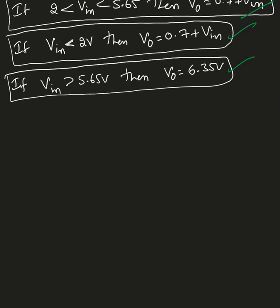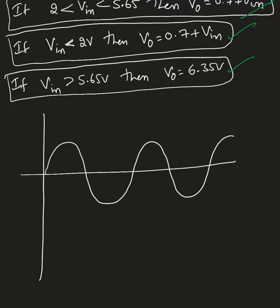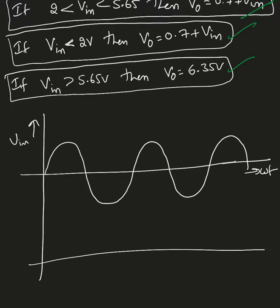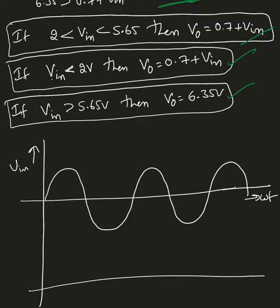Now I'll draw the waveforms. Here is the sinusoidal input waveform with omega-t on the x-axis. When V_n equals 0, V_out equals 0.7, so the output starts at 0.7 volts. The output follows the input (offset by 0.7V) until the input reaches 5.65V.